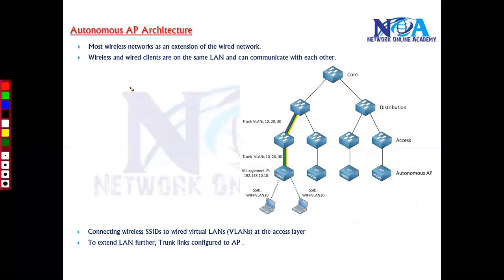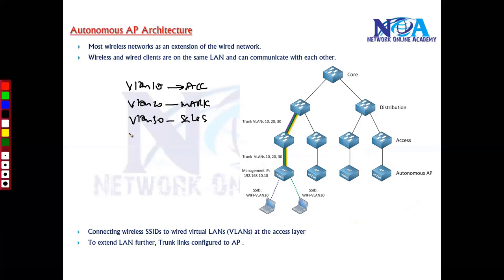On the wired network you do have multiple VLANs. For example, in your company we have multiple departments: let's say VLAN 10 for accounts, VLAN 20 for marketing, and VLAN 30 for sales. On the wired network we'll be creating these VLANs.